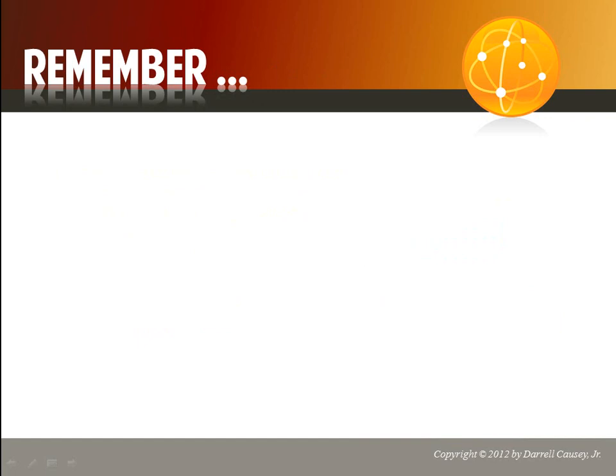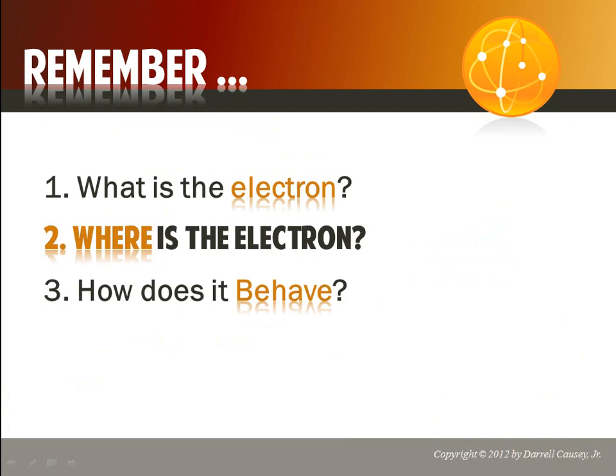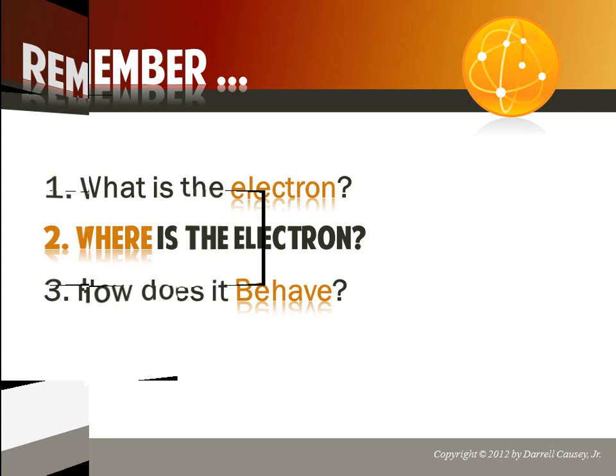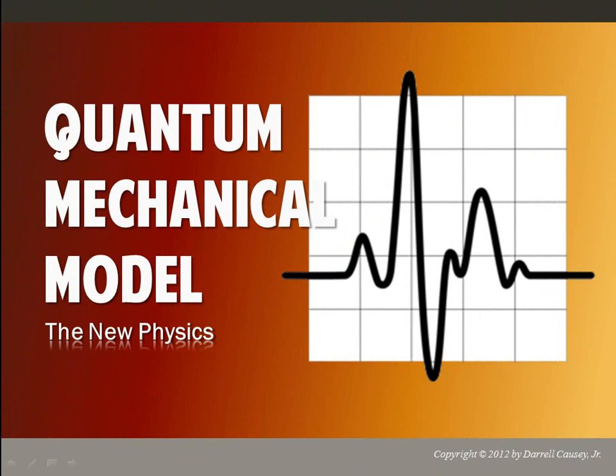Remember that when we started off this study of the atom and the atomic models, there were three questions we need to answer. One, what is the electron? Two, where is the electron? And three, how does it behave? The quantum mechanical model is going to finish up where the electron is and how to find it. Then we'll use that information to talk about how the electron behaves — and remember, that's the important part because electrons are responsible for how things bond and react.